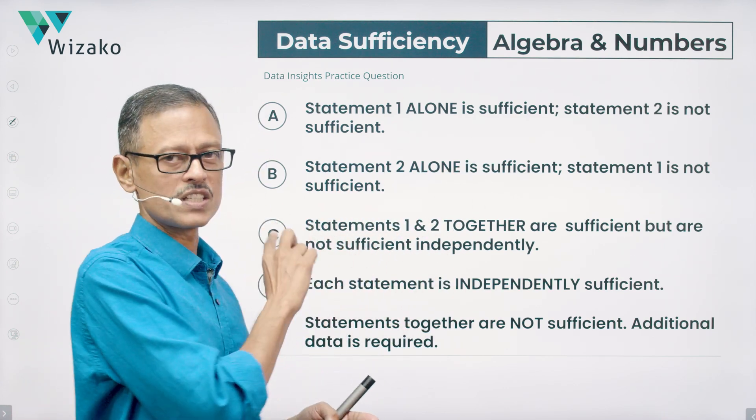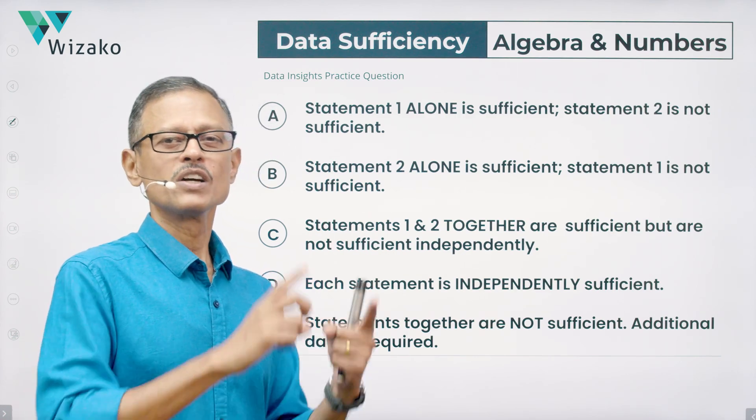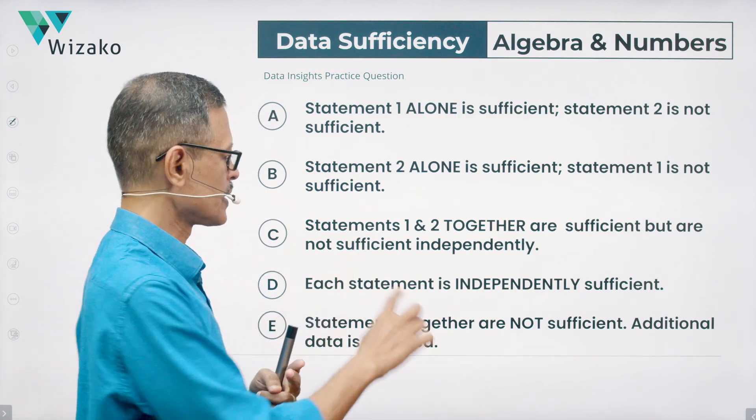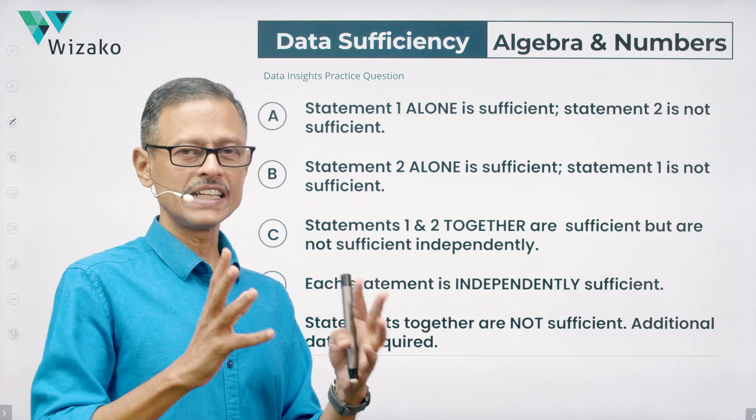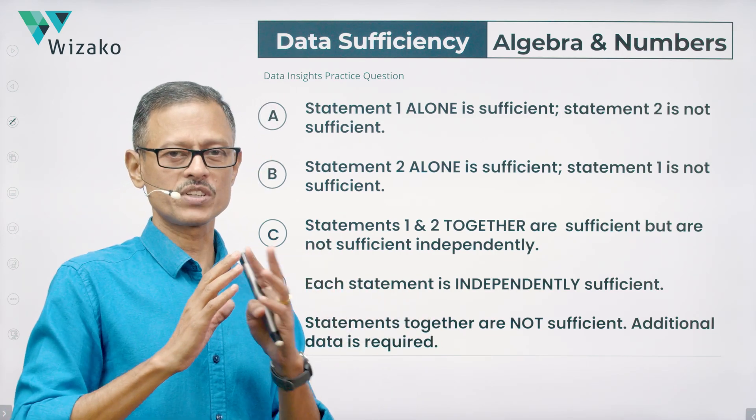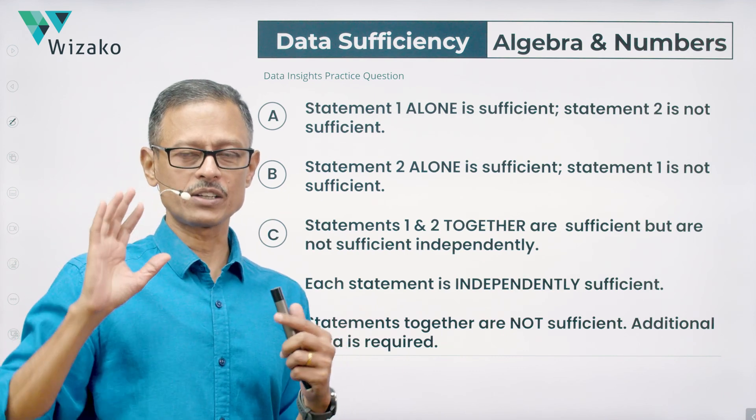Independently, the statements are not sufficient, but together they are, then the answer option is C. One alone is sufficient, so is two alone. The statements are independently sufficient, then the answer option is D. Finally, the given data is not sufficient, the answer option is E. These answer options do not change as far as GMAT goes.